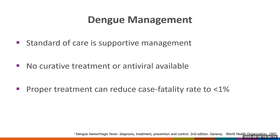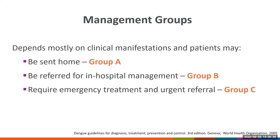The standard of care is supportive management. There is no curative treatment or antiviral available for dengue, but proper treatment with IV fluids can reduce case fatality rate to less than 1%. Depending on clinical manifestations, patients will be assigned to group A and managed as outpatients, group B requiring observation or hospitalization, or group C for emergency treatment.